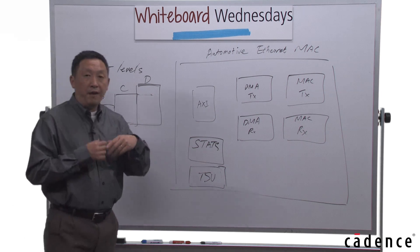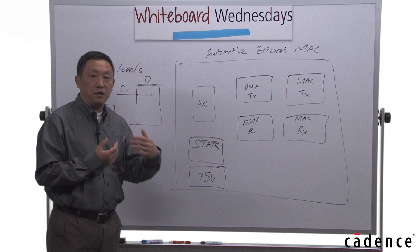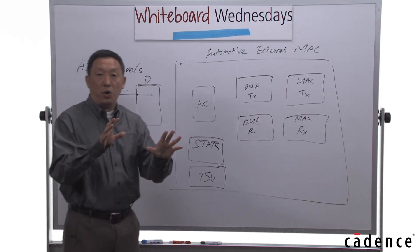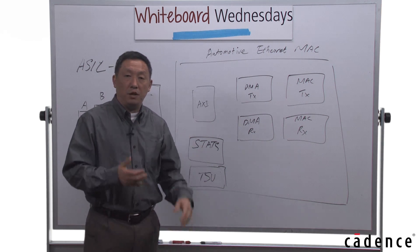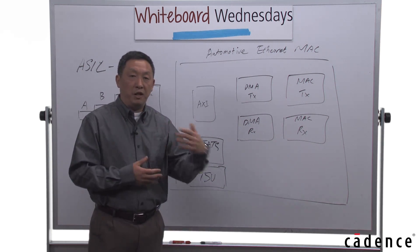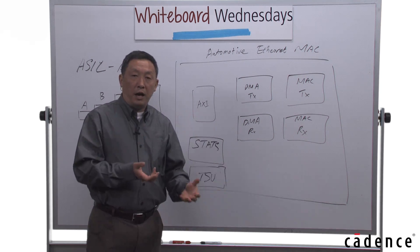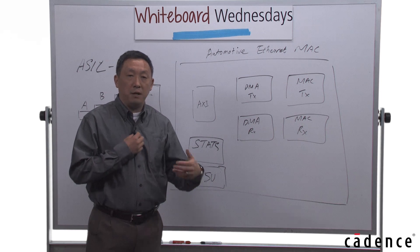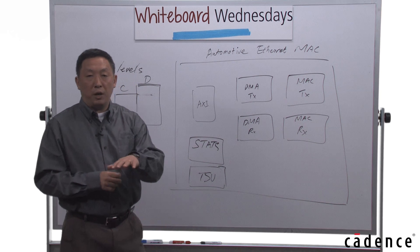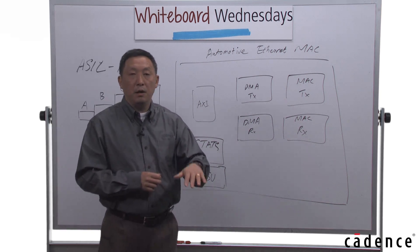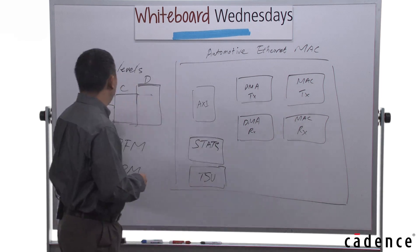The FMEDA analysis assesses the strengths of the IP when it's facing random failures. The way the process works is that we take the IP, we make certain assumptions of the usage model of the IP at system level, and we define the safety goals. We associate the IP with a set of safety protection mechanisms that allow us to better achieve the safety goals. Then we go through a quantitative process to calculate the failure metrics in order to meet different ASIL levels.